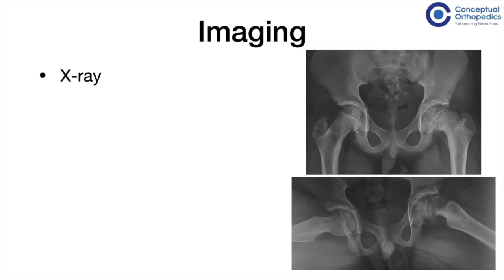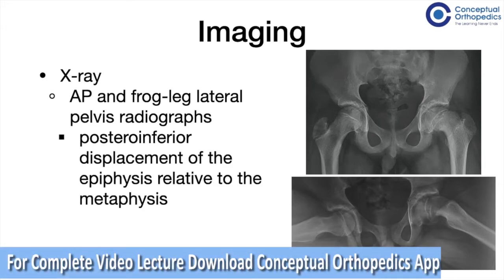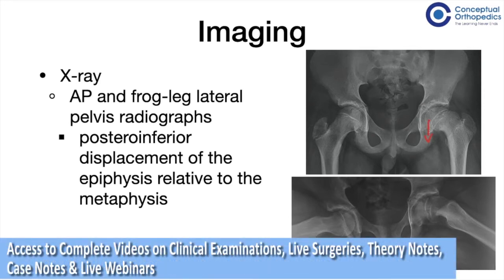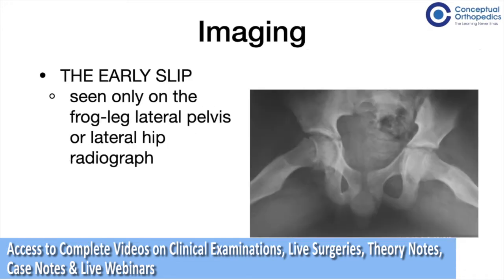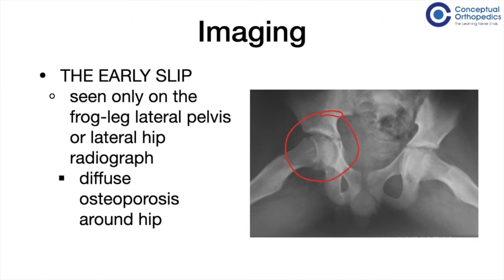Coming to imaging, the first imaging we generally do is x-rays, where the AP and frog leg lateral pelvis radiographs are the workhorse. We can see a posterior inferior displacement of the epiphysis relative to the physis. On the AP radiograph we can see inferior displacement of the epiphysis, and on the lateral view we can see posterior displacement. In early slips, seen on frog leg lateral radiographs, we see diffuse osteoporosis around the hip and a haziness around the physis, called epiphysiolysis.